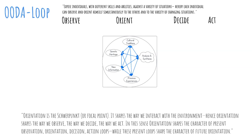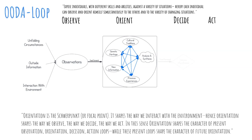The input that we use to orient comes from what we observe. Our observations are data. These observations are a reflection of what we have measured about unfolding circumstances, information that we get from the outside, and the data generated by our constant interaction with the environment. The observations, and especially mismatches that we identify, drive us to orient or to reorient. The outcome of orienting is that we have a new mental picture and are ready to decide. We formulate a decision or a hypothesis. Based on this formulation we can act — either by taking an action based on our decision, or to test our hypothesis.